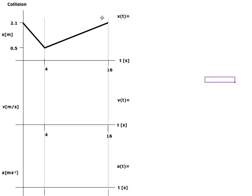This is the position graph — we call it position, not displacement. Displacement would be from one position to another. The x-axis is time, with timestamps at four seconds and sixteen seconds. The position gets smaller towards the motion sensor, then the cart collides and moves away. These are straight lines, so it must be constant velocity on each segment. The scale shows 2.1 meters here and 0.5 meters here; I still need to apply scales for velocity and acceleration.